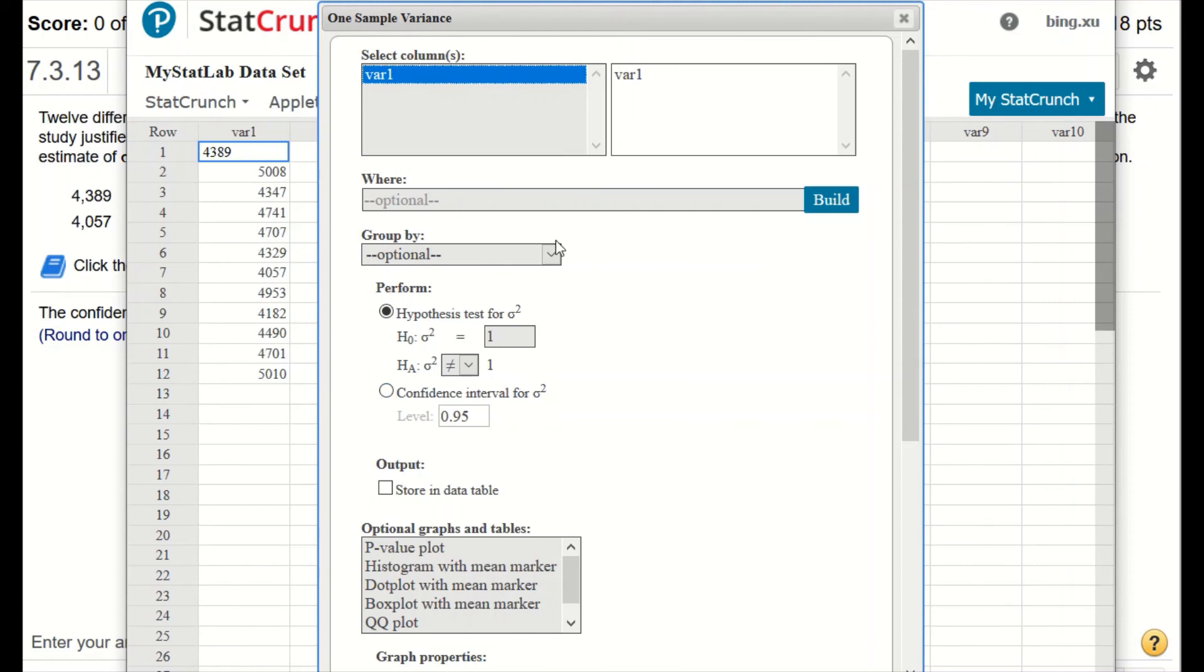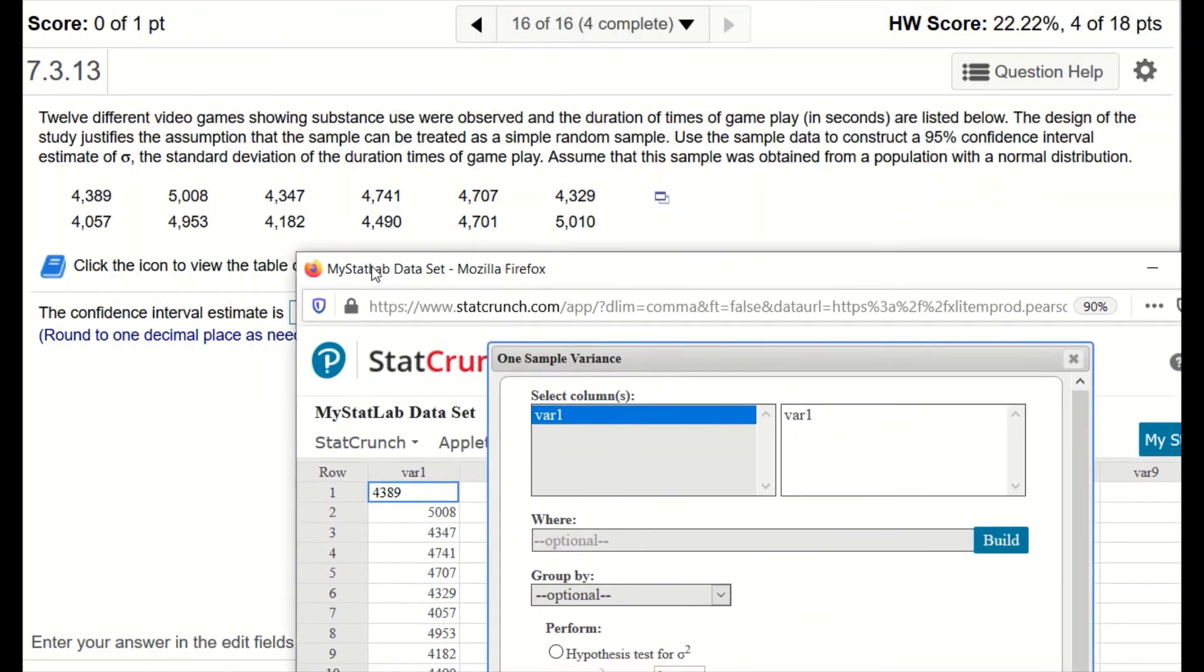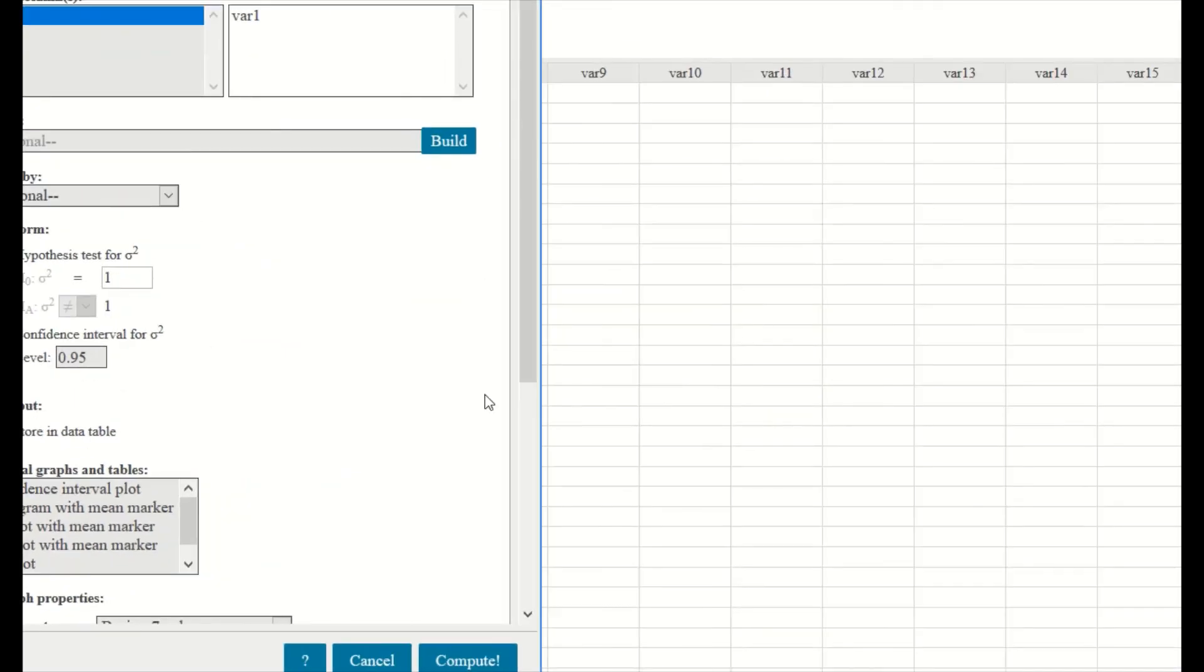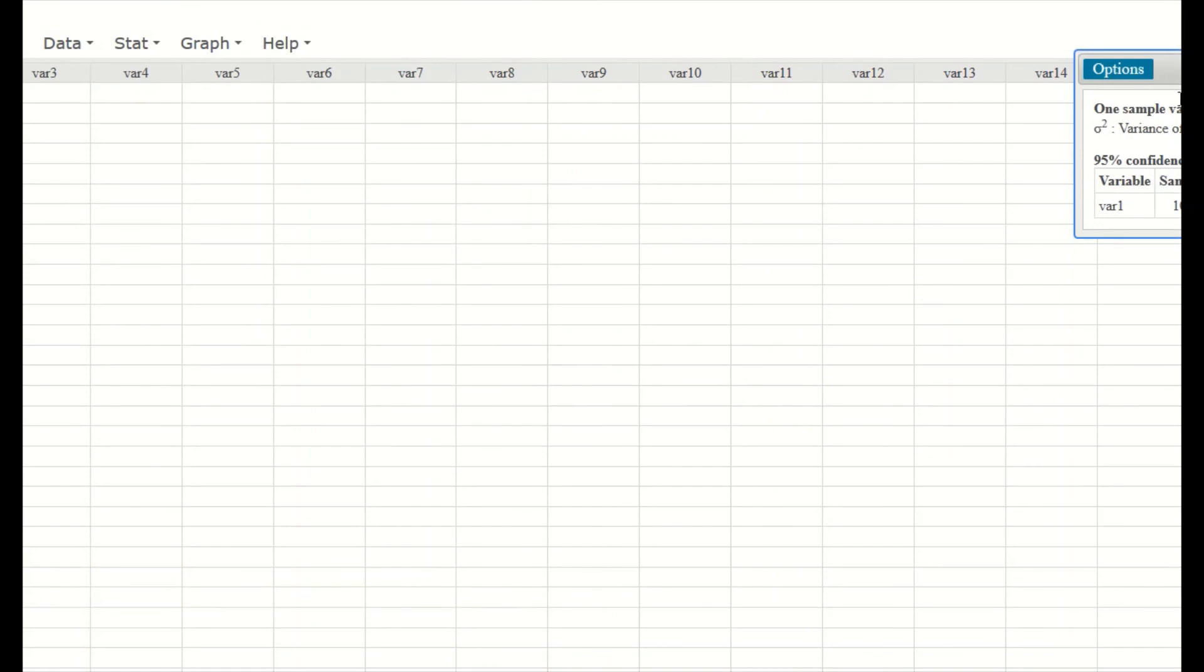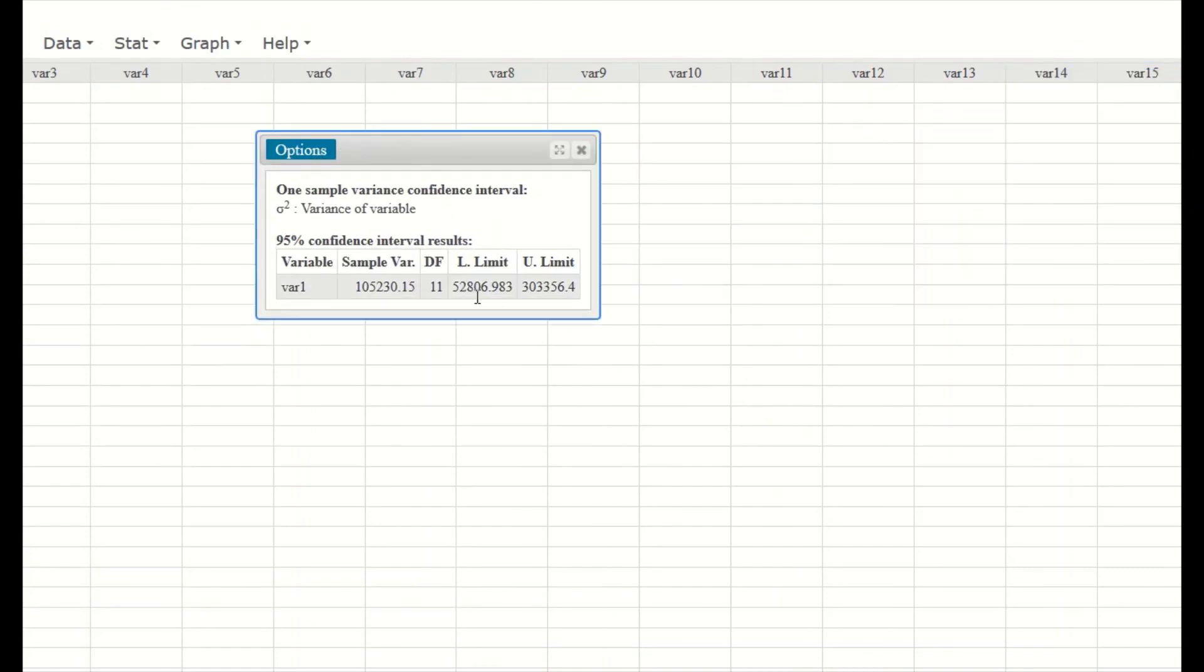Pick the variable one, this column, and the confidence interval, I forgot what it was, 95%. Okay, so 0.95. Great. So I will click Compute here. Okay, so here are the values. The lower limit is this, and the upper limit is this.